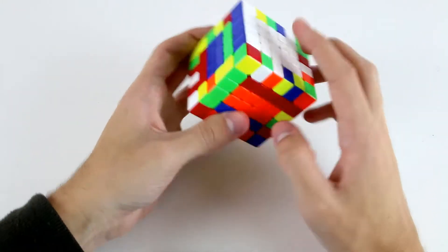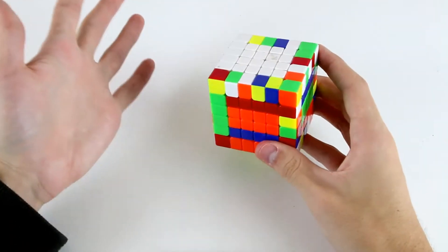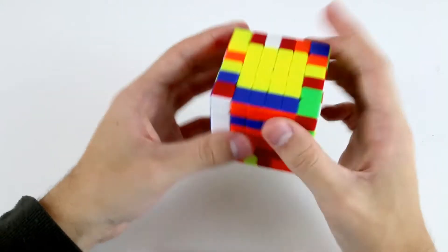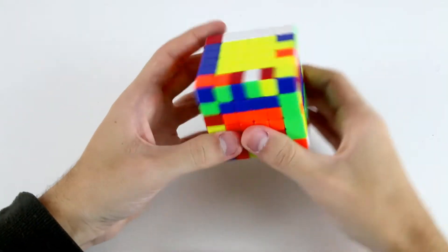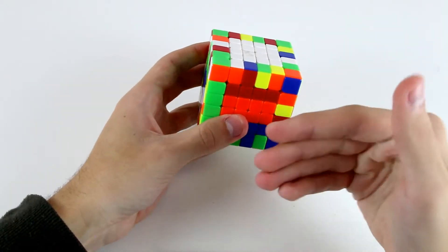But unfortunately in this case, storing that one here has meant that these ones want to store on opposite sides now. To store it on this face and then return to solving is a little bit inefficient and messes up the flow of the solve.